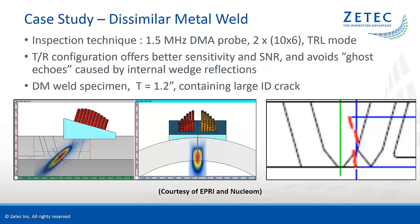In our case study, we used a dissimilar metal weld practice specimen made available by the EPRI NDE Center in Charlotte. The specimen has a wall thickness of 1.2 inches and contains a large branched ID surface-breaking crack. For this purpose, we used a recently designed large aperture DMA probe at 1.5 MHz, where both transmitter and receiver arrays have a 10 by 6 element configuration, and this probe assembly can be driven by the Topaz64 system.